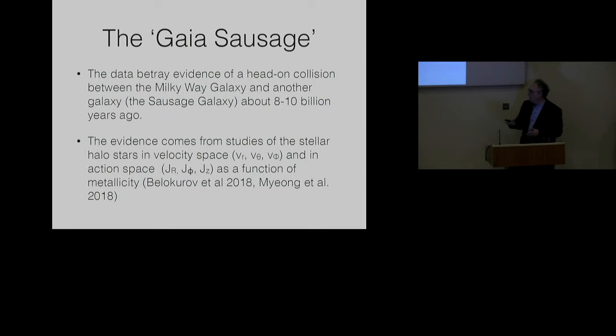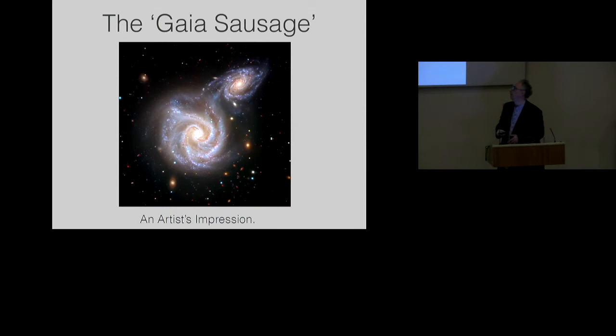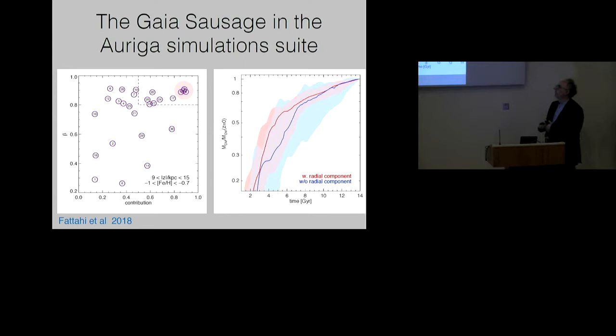The data betray the evidence of a head-on collision between the Milky Way galaxy and another galaxy, the sausage galaxy, about 8 to 10 billion years ago. And the evidence comes from studies of the stellar halo stars in velocity space and in action space as a function of metallicity, and this is a calculation we could only do subsequent to Gaia Data Release 2, because only Gaia Data Release 2 provided us with sufficiently accurate proper motions or tangential velocities for us to figure out that these orbits were so radial. And this is an artist's impression of what happened from the press release. A long time ago, 8 billion years ago, the sausage galaxy merged with the Nascent Milky Way galaxy.